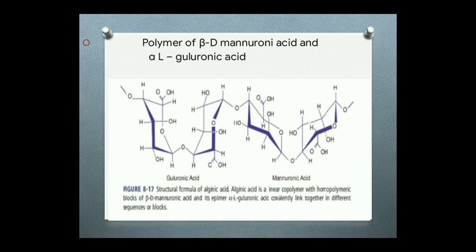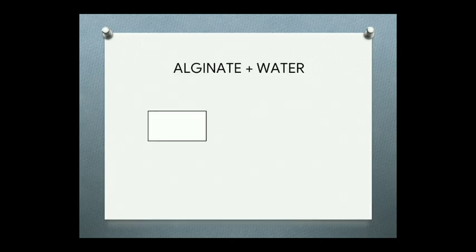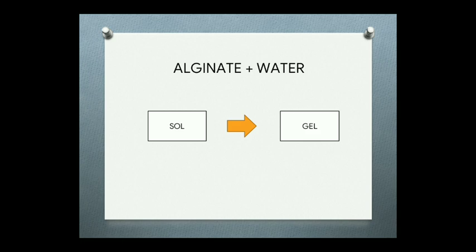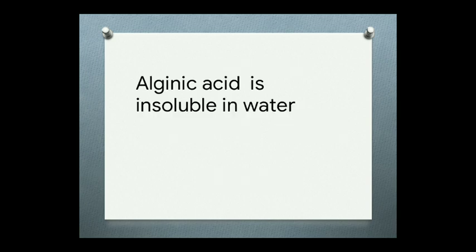Mannuronic acid and guluronic acid are epimers and they are covalently linked to each other. When alginate is mixed with water it is converted to a salt, and the salt is converted to a gel. This process of conversion of salt to gel is called gelation — that means setting. However, alginic acid is insoluble in water.